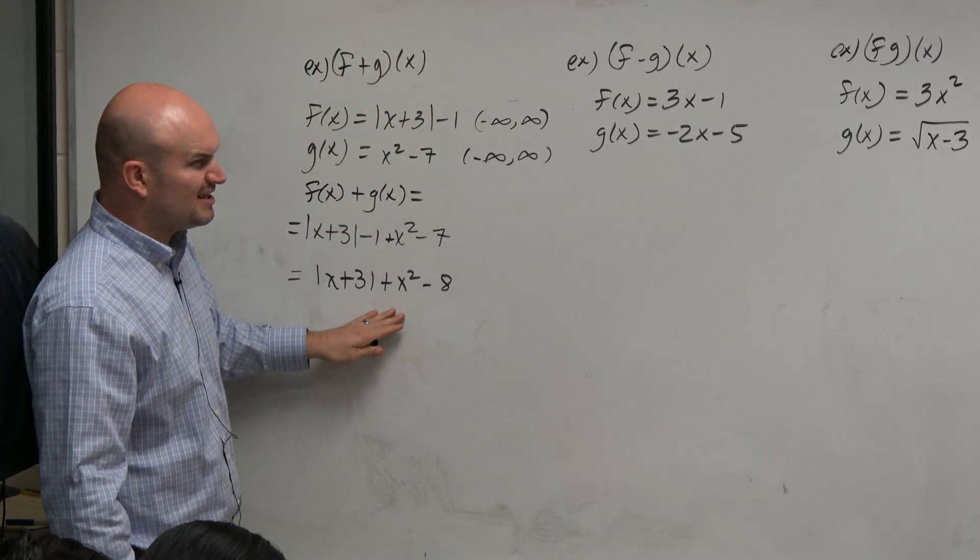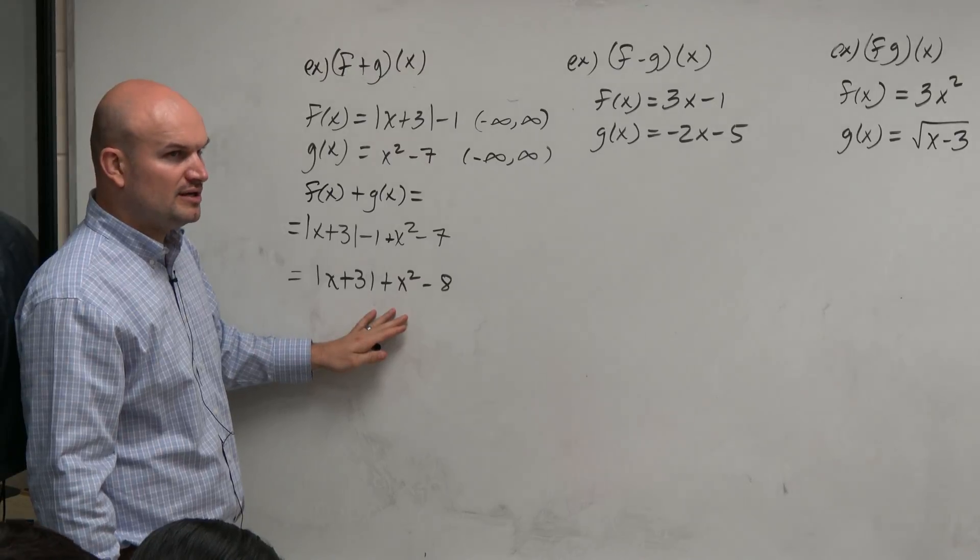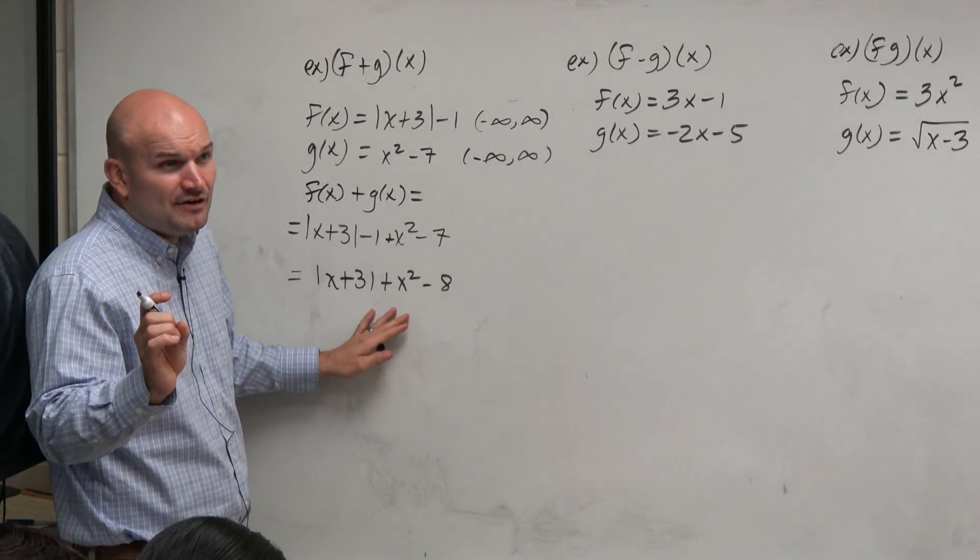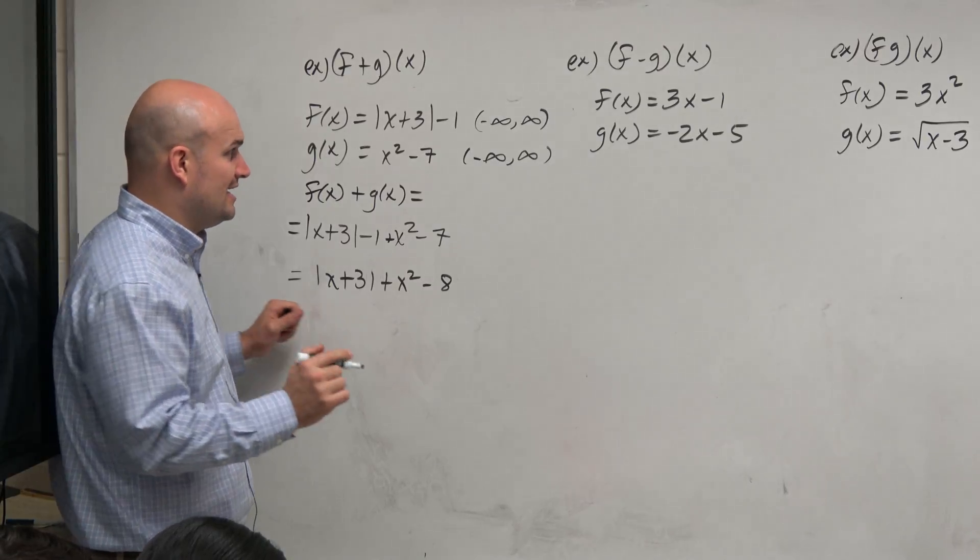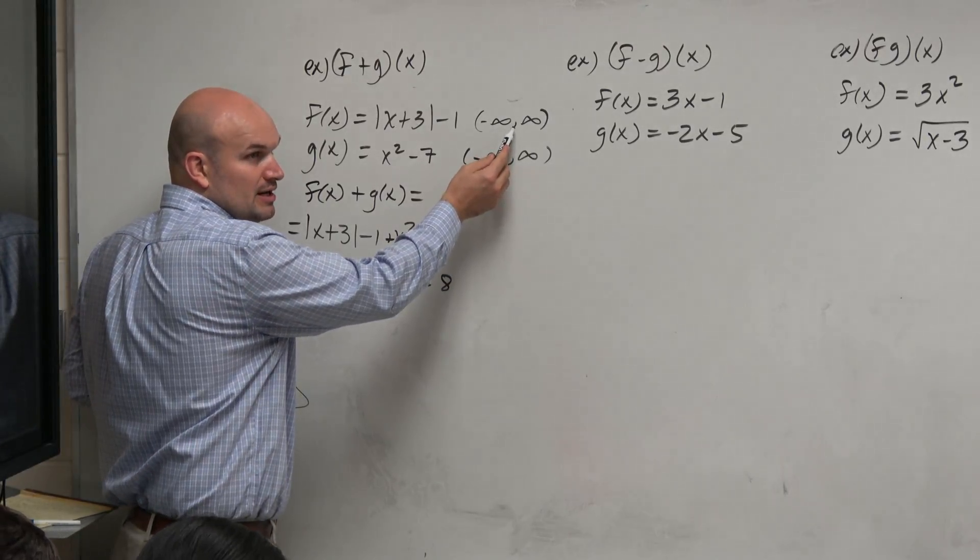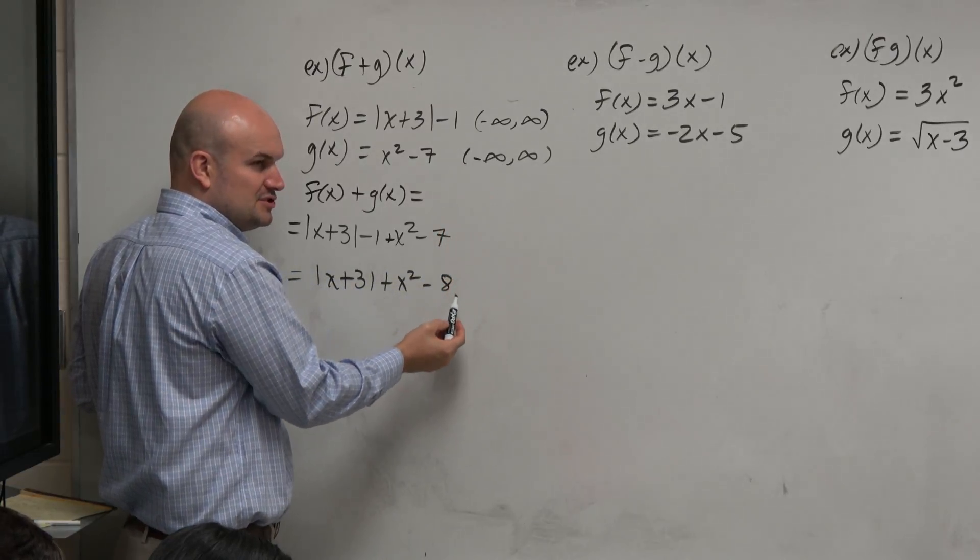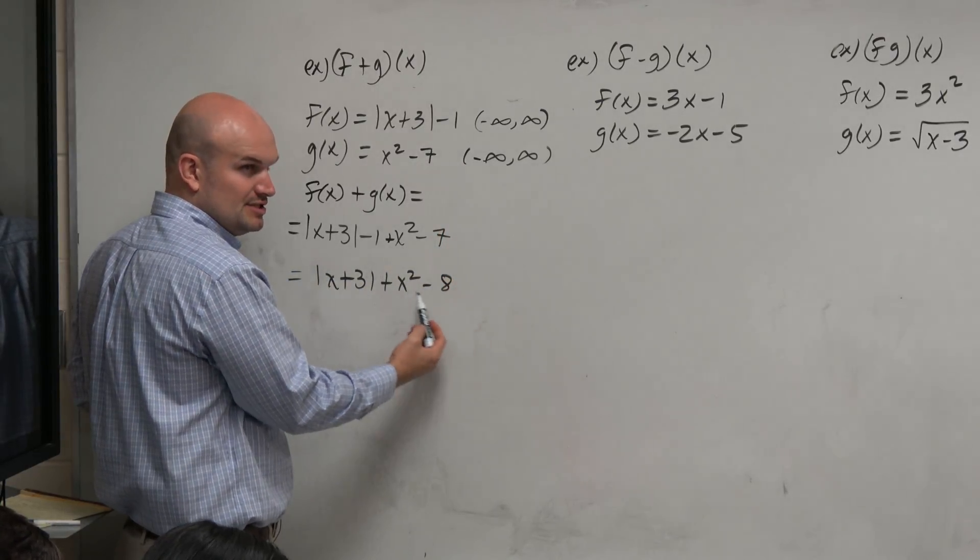So when we look into adding them, this looks like a pretty confusing function, right? I mean, if you were to ask, what's the graph look like? It's kind of weird. However, can we at least make the understanding that if you're adding a function that's all real numbers, and another function that has a domain all real numbers, then this domain doesn't have any restrictions either, right?